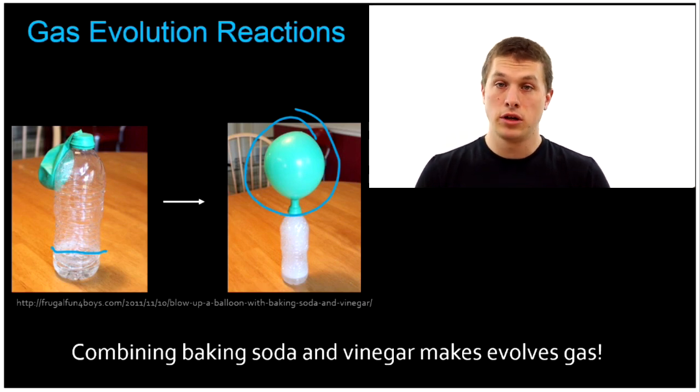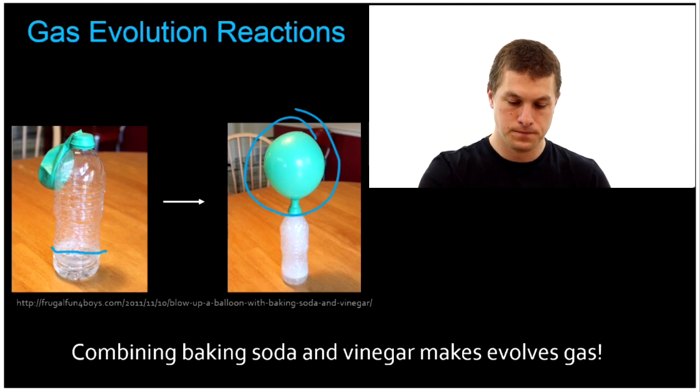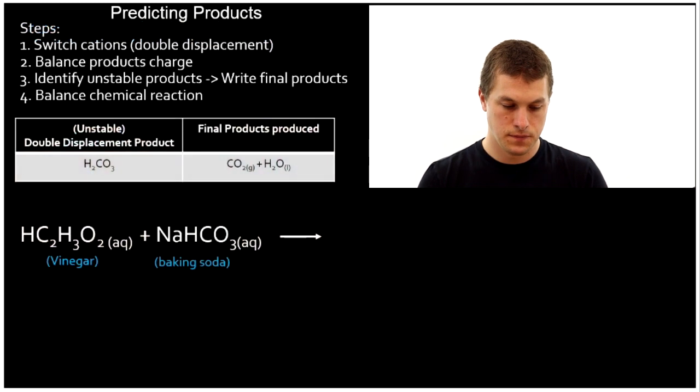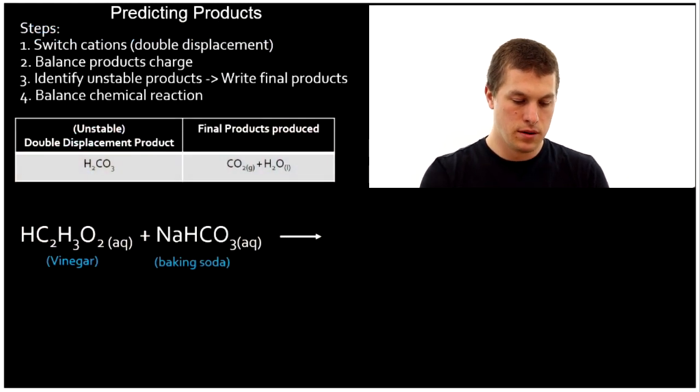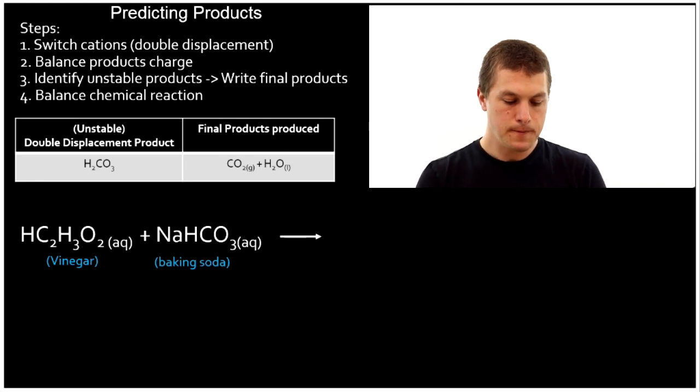Let's start then by looking closer at baking soda and vinegar. What we see here is the combination of vinegar, which turns out to be acetic acid, with baking soda, which turns out to be sodium bicarbonate.